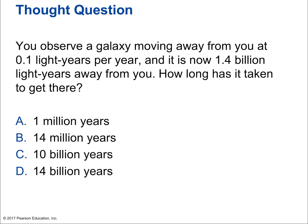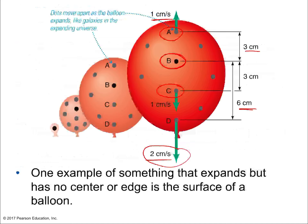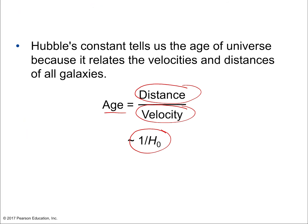Here's an example: you observe a galaxy moving away at 0.1 light years per year, and it is now 1.4 billion light years away. How long has it taken? Clearly 14 billion years — just like the driver example. That's how we calculate the age of the universe from Hubble's law. Hubble's constant tells us the age because we simply take distance divided by velocity, which gives us 1 over Hubble's constant. Everything moving away means everything must have started at one point — all galaxies had a common origin.